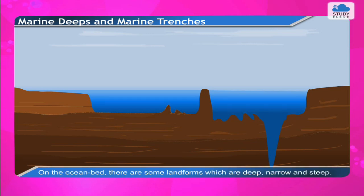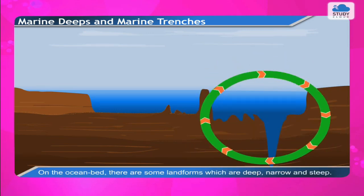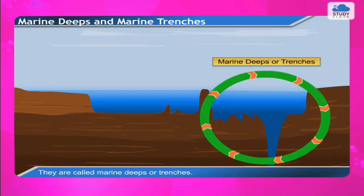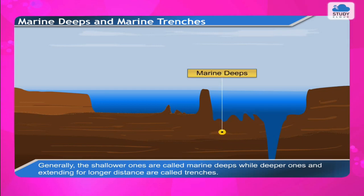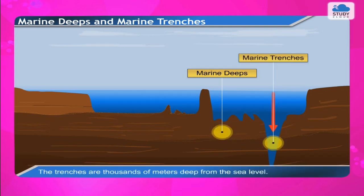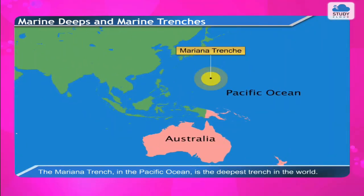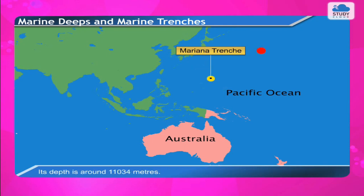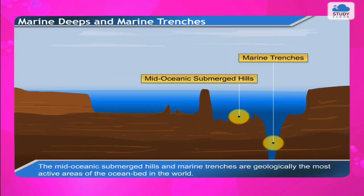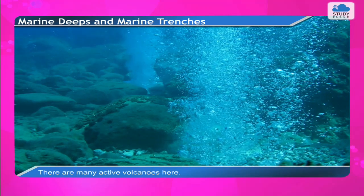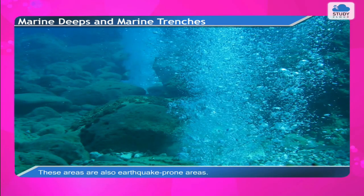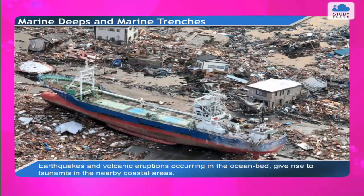On the ocean bed there are some landforms which are deep, narrow, and steep, called marine deeps or trenches. The shallower ones are called marine deeps while deeper ones extending for longer distances are called trenches. The Mariana Trench in the Pacific Ocean is the deepest trench in the world, at around 11,034 meters. Mid-oceanic submerged hills and marine trenches are geologically the most active areas, with many active volcanoes. These areas are earthquake prone, and earthquakes and volcanic eruptions on the ocean bed give rise to tsunamis in nearby coastal areas.